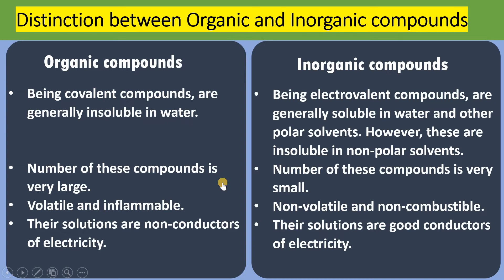Organic compounds, being covalent, are generally insoluble in water, whereas inorganic compounds, being ionic, are generally soluble in water and other polar solvents. Because we know that like dissolves like — inorganic compounds contain ionic bonds that are polar, so they are soluble in polar solvents but insoluble in non-polar solvents. The number of organic compounds is very large, whereas inorganic compounds are fewer. Organic compounds are volatile and inflammable, whereas inorganic compounds are non-volatile and non-combustible. Solutions of organic compounds do not conduct electricity, whereas solutions of inorganic compounds contain ions and are good conductors of electricity.